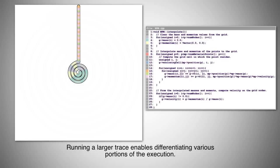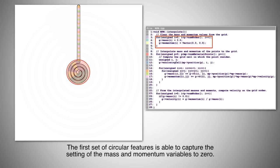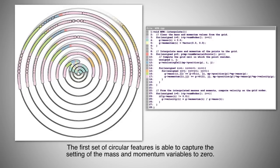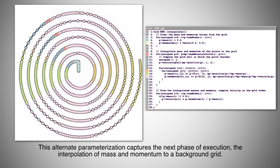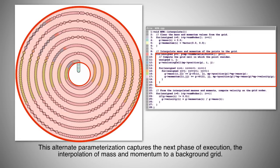Running a larger trace enables differentiating various portions of the execution. The first set of circular features is able to capture the setting of the mass and momentum variables to zero. This alternate parameterization captures the next phase of execution, the interpolation of mass and momentum to a background grid.